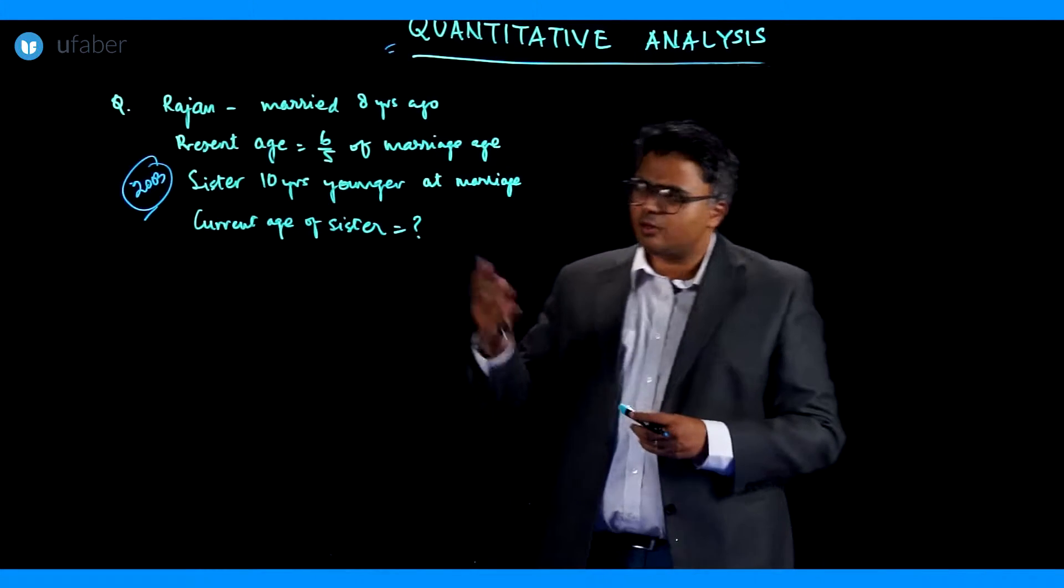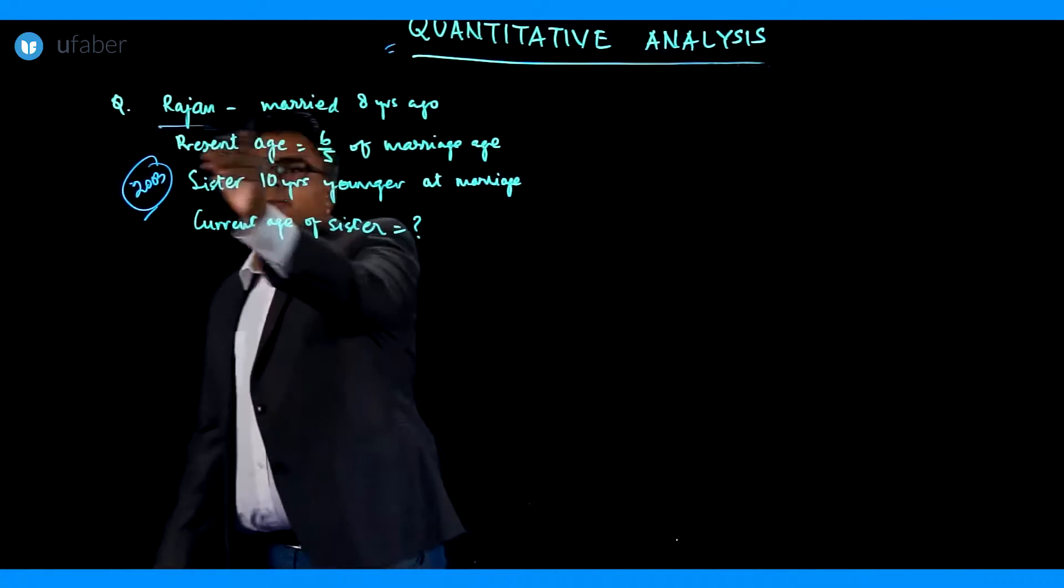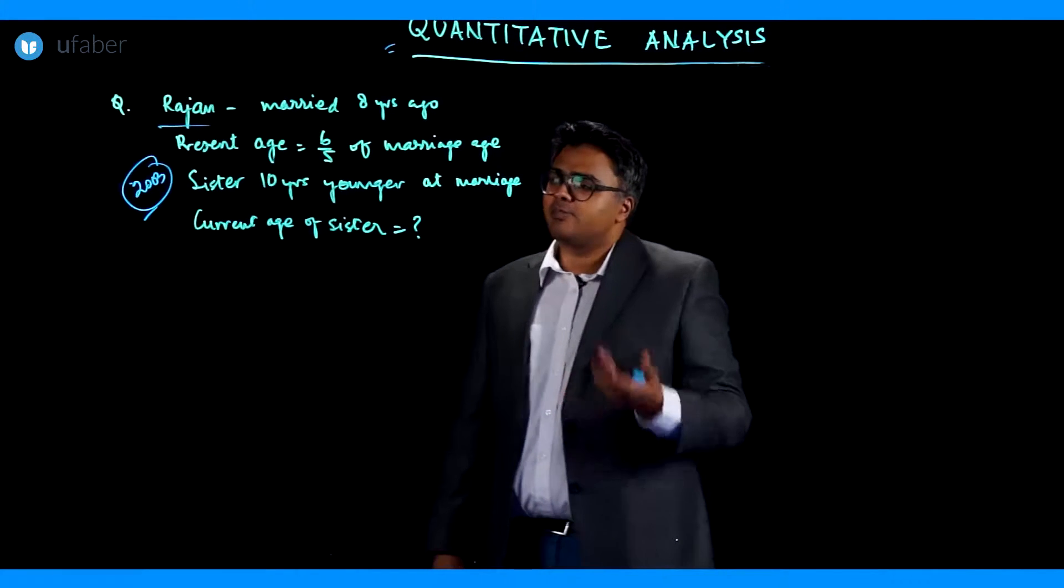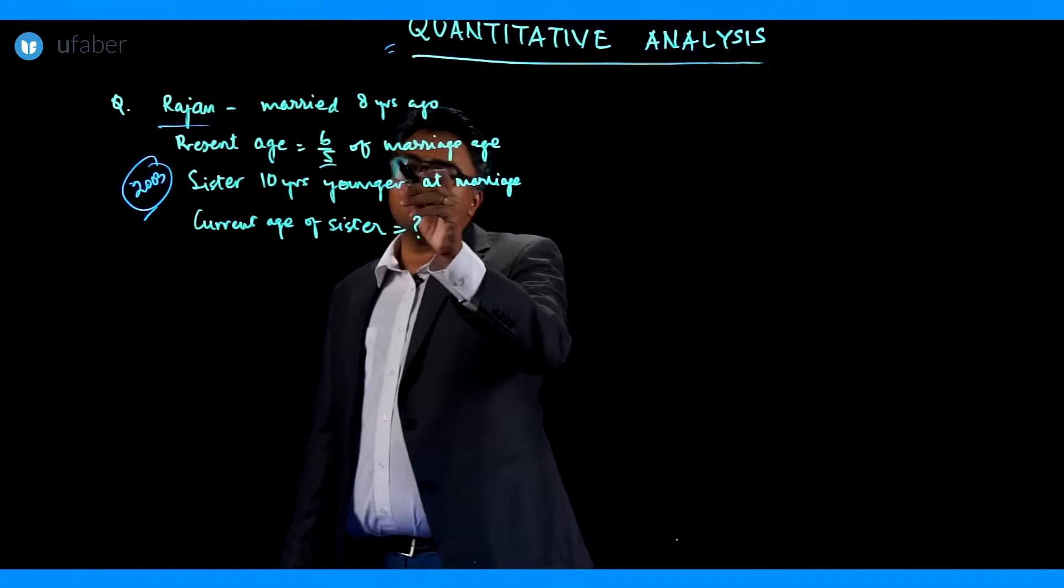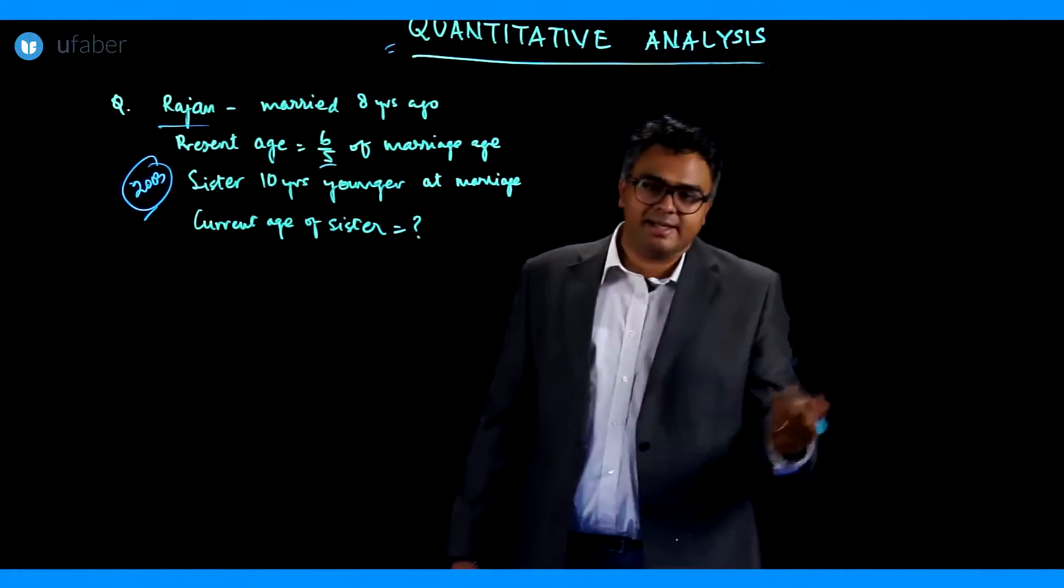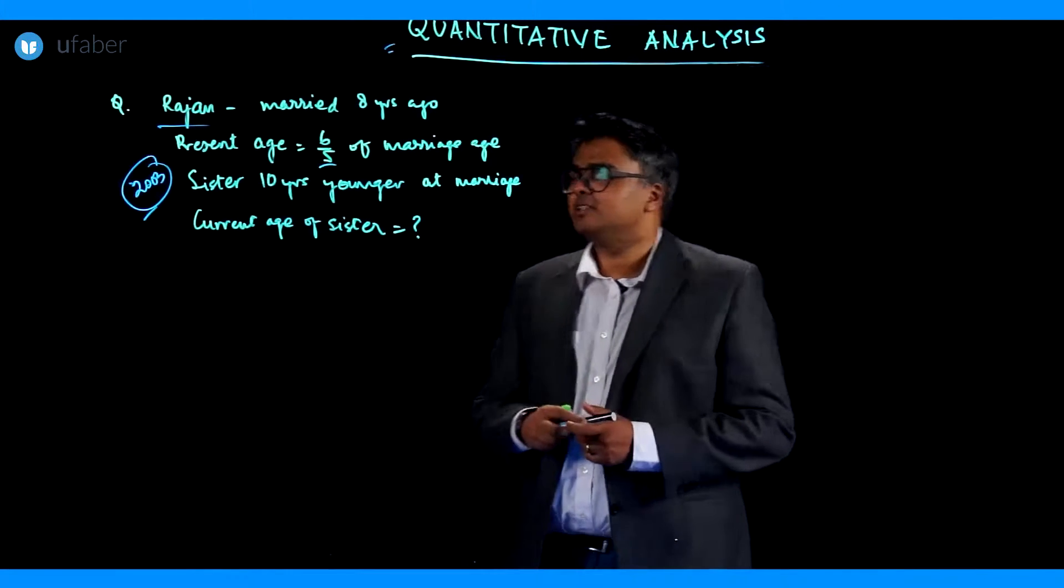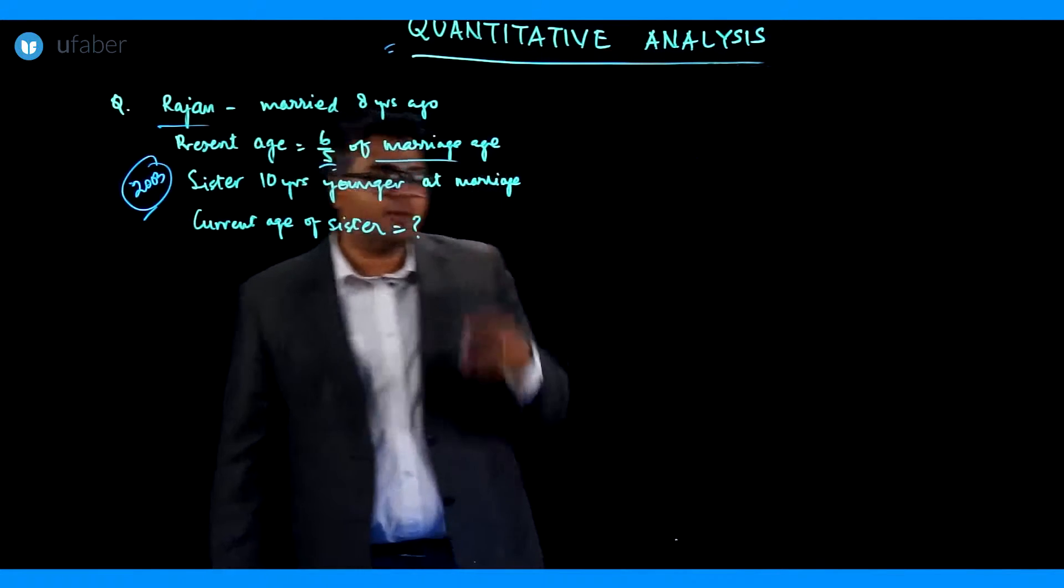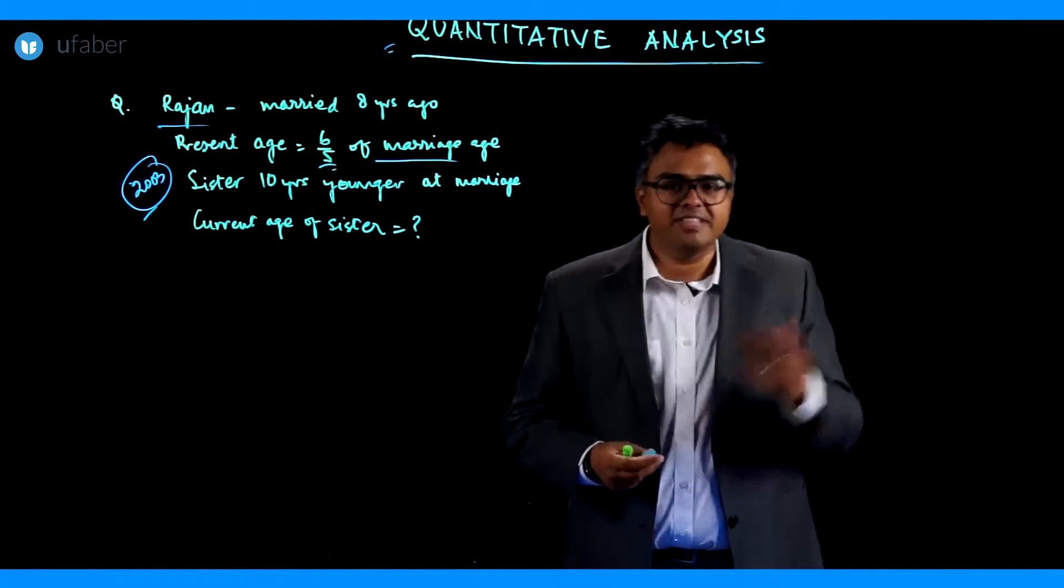Now let's look at the question. There is a guy called Rajan who got married 8 years ago. His present age is 6 by 5 of the age at which he got married. So his current age is 6 by 5 of the age at which he got married. It has increased now, of course, because everybody's age increases.